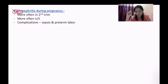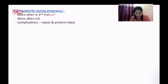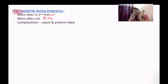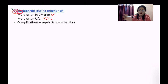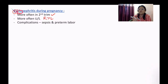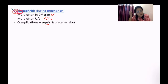Important obstetric points for pyelonephritis during pregnancy: it is more often seen in the second trimester, more often unilateral and right-sided than left-sided because the gravid uterus puts pressure on the right ureter. Consequently, there can be right-sided hydronephrosis in pregnancy, which is normal. We are very much looking out for sepsis, as fever and inflammation in the region of the abdomen can also trigger preterm labor.